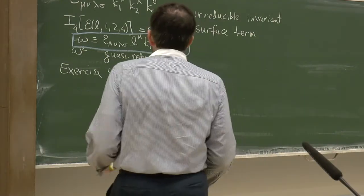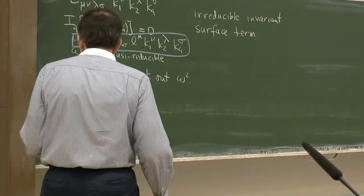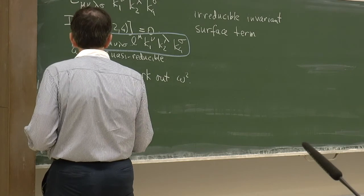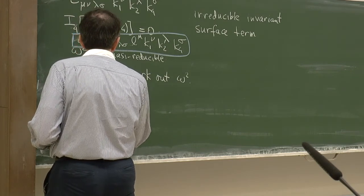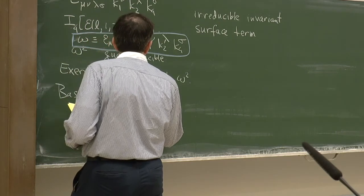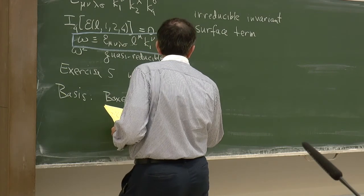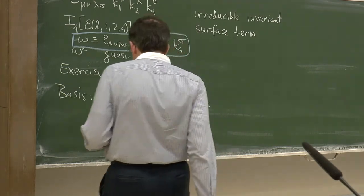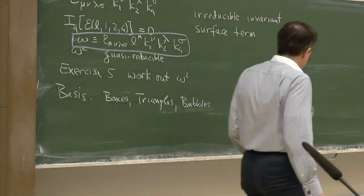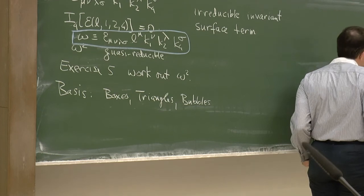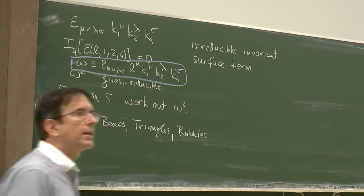We have our basis set of integrals: the scalar boxes, triangles, and bubbles. Most of the reduction terms until we got to the five-point integral did not depend on epsilon — they didn't depend on the spacetime dimension.